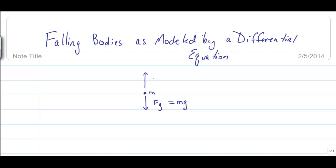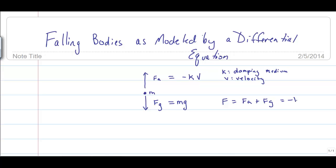There's also a force working in the opposite direction — that's air resistance, modeled by negative k times v, where k is the damping medium constant and v is velocity. So the two forces acting on the mass are fa plus fg, or negative kv plus mg.